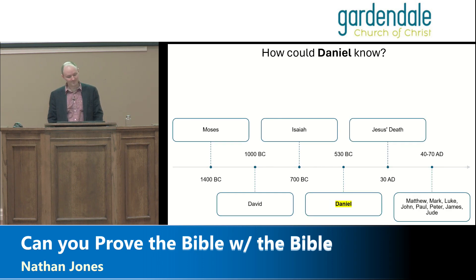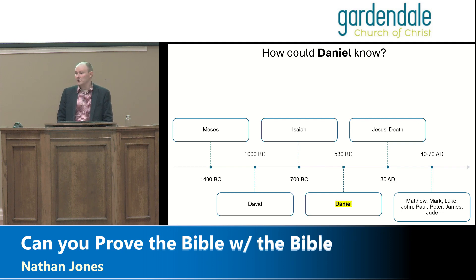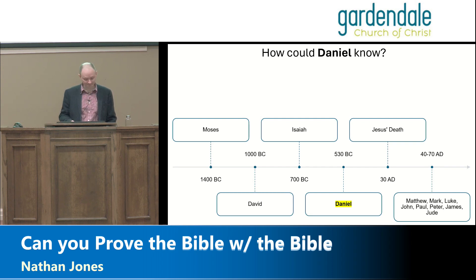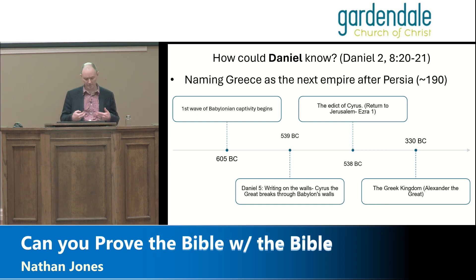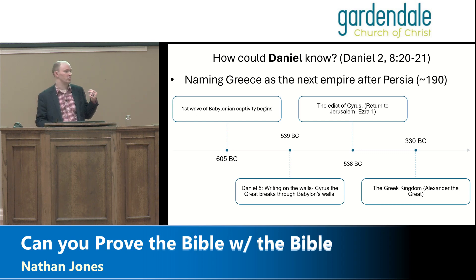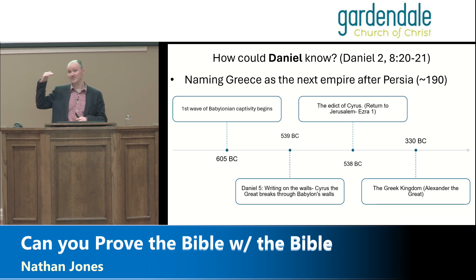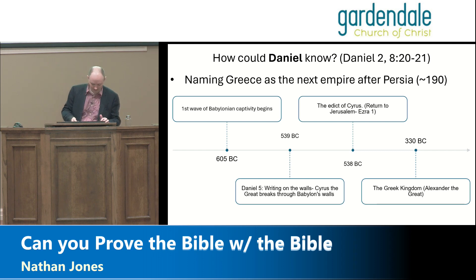Now let's look at Daniel. He lived around 600 BC, through the Babylonian Empire and into the Medo-Persian transition as an old man. Let's look at Daniel chapter 8. Background: in chapter 2, Nebuchadnezzar had a dream about a statue representing four kingdoms — he was the head of gold — but chapter 2 doesn't name the later kingdoms. By chapter 8 there's another vision.